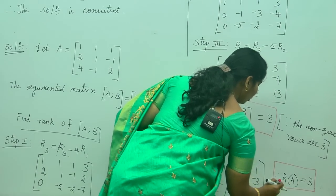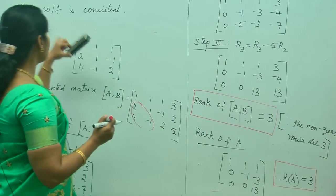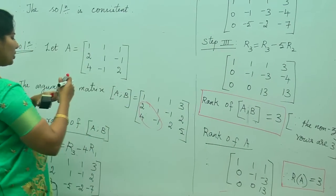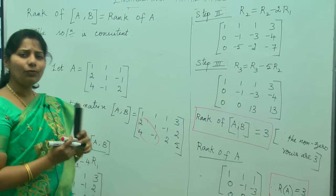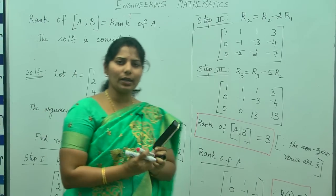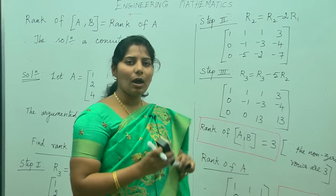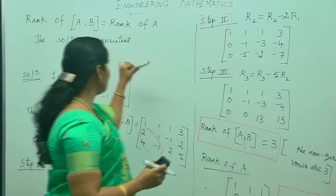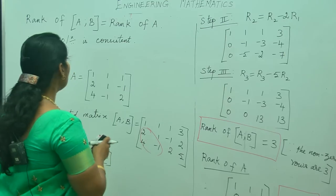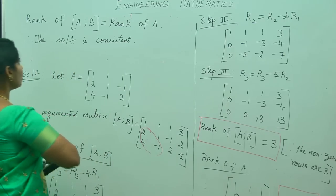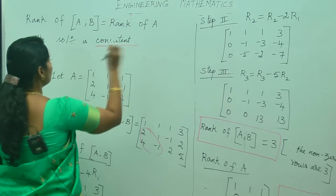The solution is consistent because the rank of the augmented matrix equals the rank of A. When the rank of the augmented matrix is not equal to the rank of A, then the solution is inconsistent. Here both ranks are equal to 3, so the solution is consistent. Since it is consistent, we need to find the solution.